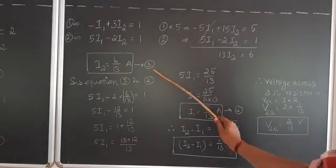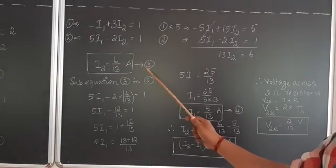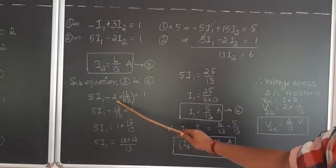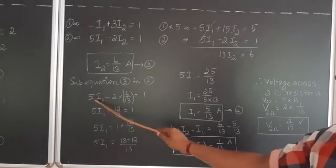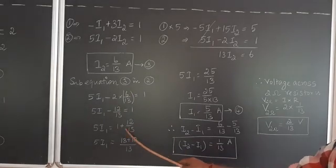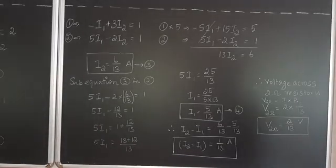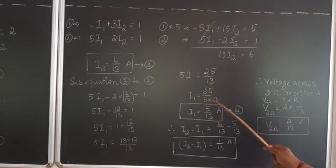Substituting i2 = 6/13 into equation 2: 5i1 − 2(6/13) = 1, so 5i1 − 12/13 = 1. Moving 12/13 to the right: 5i1 = 1 + 12/13 = 25/13. Therefore i1 = 25/(5 × 13) = 5/13 amperes.